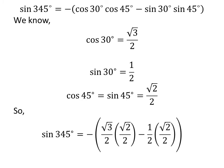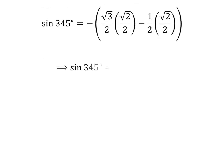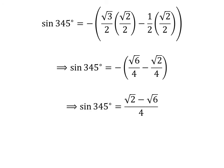We get sine of 345 degrees is equal to minus square root of 3 over 2 times square root of 2 over 2, minus one half times square root of 2 over 2. Straight multiplication gives us sine of 345 degrees is equal to minus square root of 6 over 4 minus square root of 2 over 4. Since the denominators are the same, sine of 345 degrees equals square root of 2 minus square root of 6 over 4. Taking out the common factor square root of 2 in the numerator gives sine of 345 degrees equal to square root of 2 times 1 minus square root of 3, all over 4.